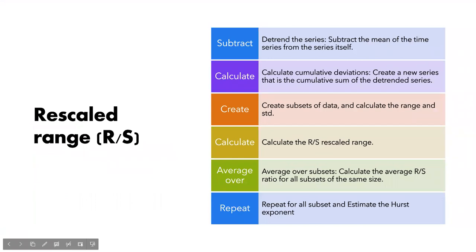We talked about the rescaled range method to calculate the Hurst Exponent, which involves a number of steps. In one of these steps, the rescaled range is known as the R statistic. It is a measure used to assess the long-term dependencies or variability of the time series data.